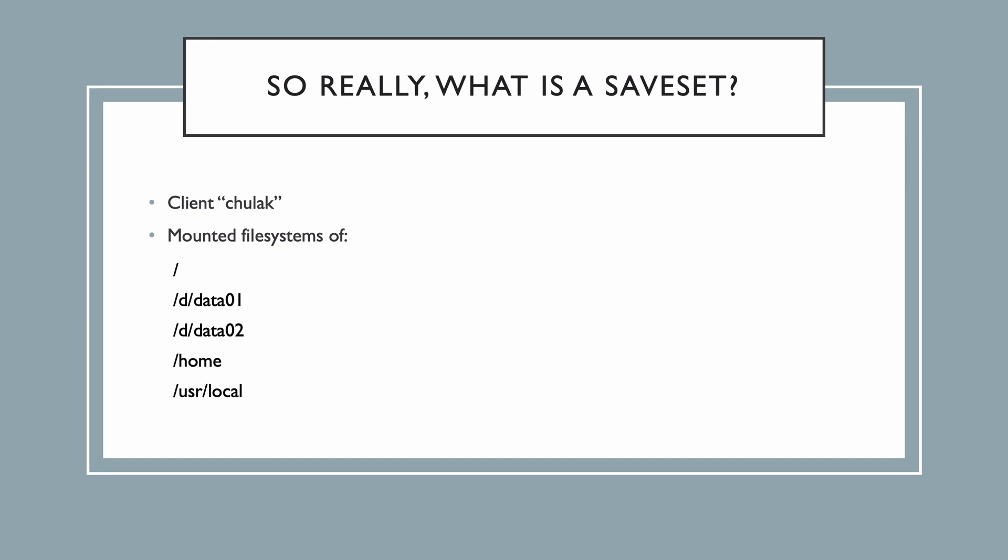Using our Linux example here, if we tell networker to backup All on Chulak, it's going to detect that each of those file systems on screen are configured to automatically mount, and it will back each one up. Each one of those file systems will be written as a save set to a networker volume.